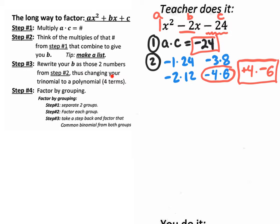It says, thus changing your trinomial to a polynomial. In other words, you're going to be changing your three terms, 1, 2, 3, to 4 terms. Okay, so let me show you.